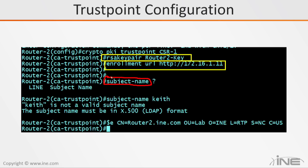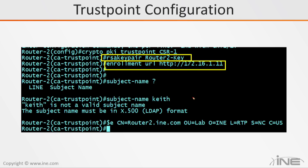When the certificate authority creates an identity certificate, it will give its own name as the issuer and put a subject name in there which refers to you. The subject name is very important. Notice you can't just type whatever you want — for example, just typing the name 'Keith' gives an error: this is not a valid subject name. It must be in X.500 LDAP format. So the subject name needs to take a particular format.